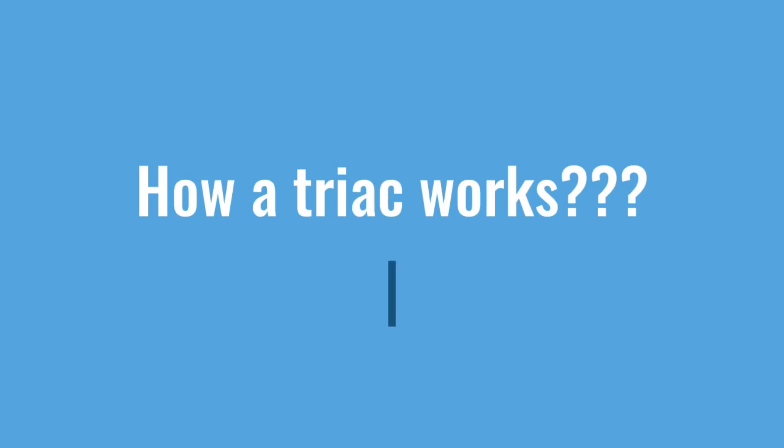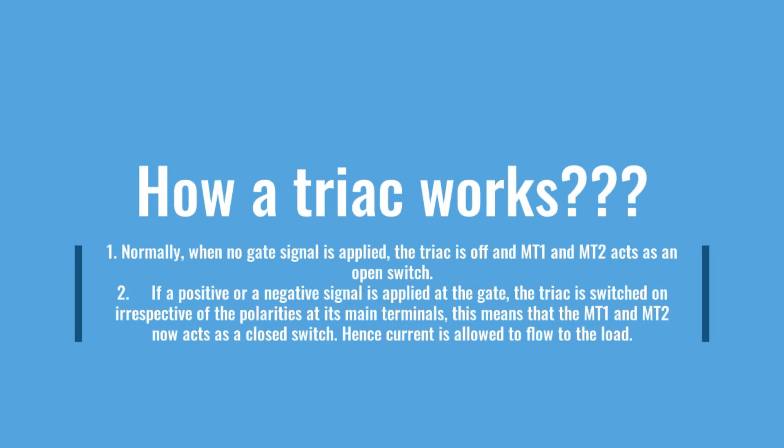How a TRIAC works. First, normally when no gate signal is applied, the TRIAC is off and main terminal 1 and main terminal 2 act as an open switch. Second, if a positive or a negative signal is applied at the gate, the TRIAC is switched on irrespective of the polarities at its main terminals.